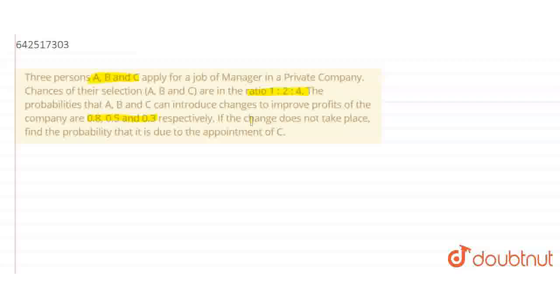If the changes do not take place, find the probability that it is due to the appointment of C. There are 3 persons A, B and C applying for the post of manager. There is a probability that they will make some changes and improve profit in the company. The question asks, if changes do not take place, what is the probability that C was appointed as manager? Let's start with the solution.